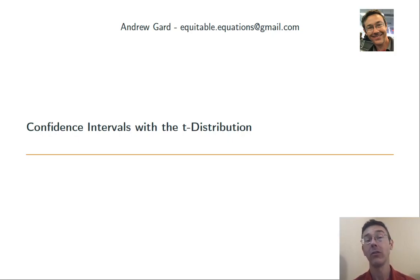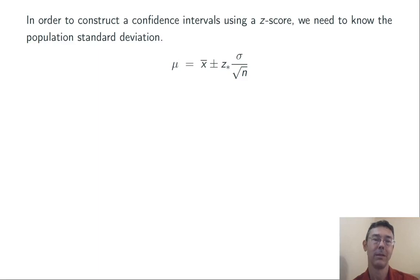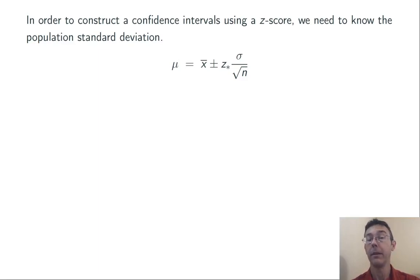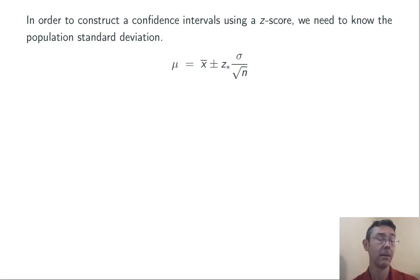Hey everybody. Today we're constructing confidence intervals using the t-distribution. When we've constructed confidence intervals up till now, we've used this formula: mu equals x-bar plus or minus z-star times sigma over the square root of n. So we're approximating the population mean mu with the sample mean x-bar, plus or minus some margin of error. That margin of error depends on the population standard deviation sigma, the sample size n, and a critical z-score chosen based on our level of confidence.